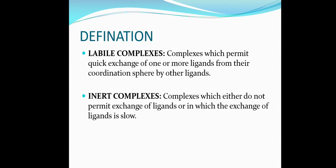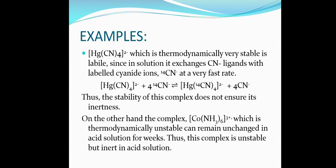Let us understand through an example. [HgCN₄]²⁻ is thermodynamically very stable, but this complex can easily exchange its cyanide ligands. Remember: when we say a compound is stable, it does not mean it is inert. Inertness and stability are two different terms. A compound may be thermodynamically very stable but its ligands may be very easily exchanged.